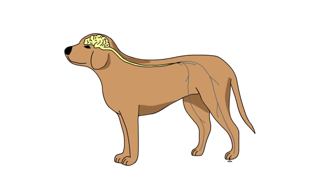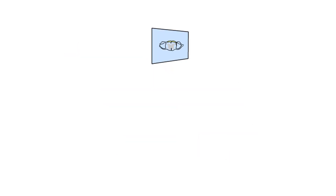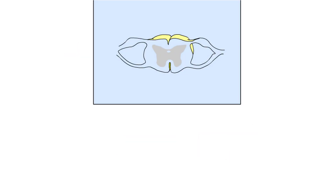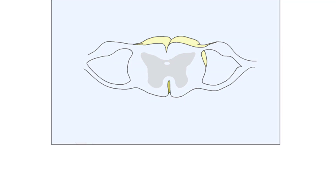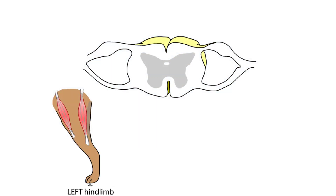The spinal cord receives and processes information from the body, and also acts as the final common pathway for most voluntary and involuntary movements. In this animation, we will examine the spinal pathways involved in the escape from a painful stimulus.